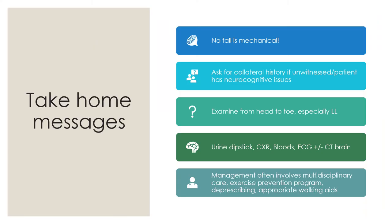Take-home messages: No fall is mechanical — it is either intrinsic, extrinsic, or has a precipitating factor, or all of these contributing. Ask for collateral history if it is an unwitnessed fall or the patient has neurocognitive issues. Examine from head to toe, especially the lower limbs. Investigation-wise: do a urine dipstick, chest x-ray, simple bloods, ECG, plus or minus a CT brain. And lastly, management often involves multidisciplinary care, exercise prevention programs, deprescribing, and providing appropriate walking aids.